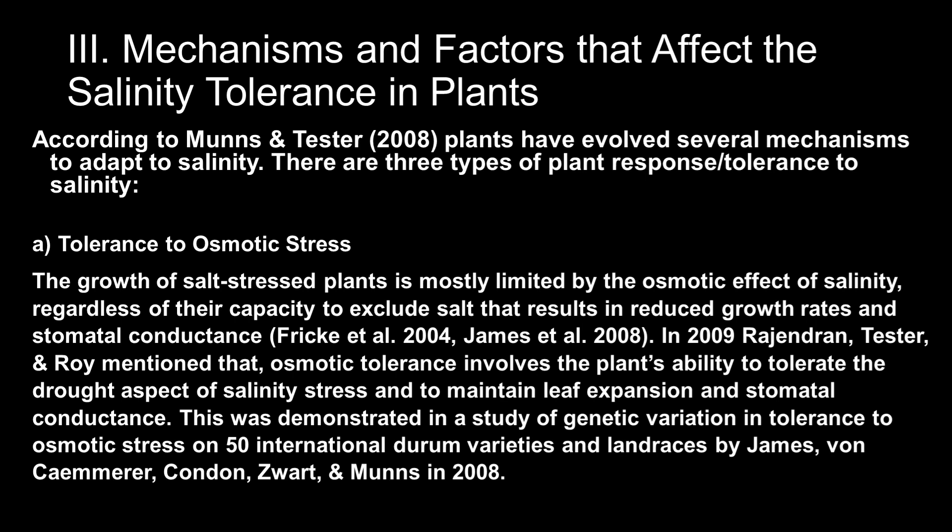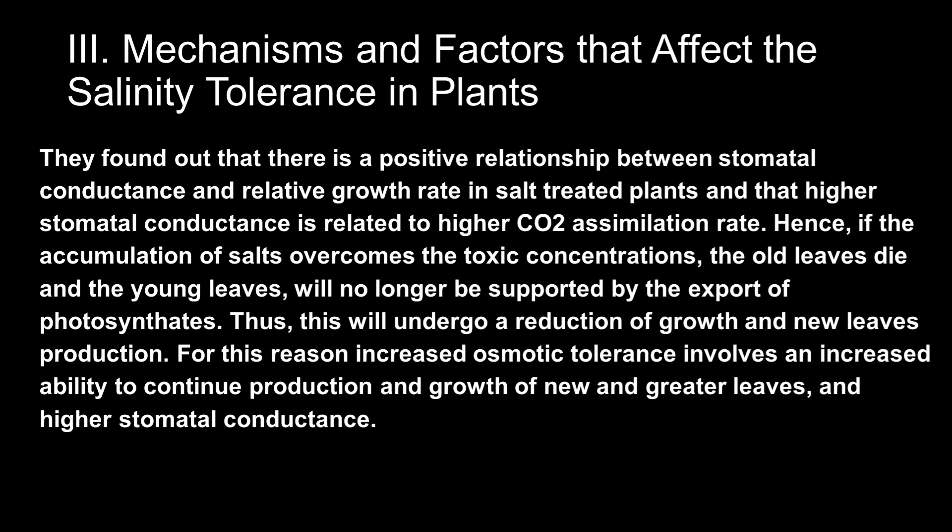The growth of salt-stressed plants is mostly limited by the osmotic effect of salinity, regardless of their capacity to exclude salt, resulting in reduced growth rates and stomatal conductance. In 2009, Rajendran, Tester, and Roy mentioned that osmotic tolerance involves the plant's ability to tolerate the drought aspect of salinity stress and to maintain leaf expansion and stomatal conductance. This was demonstrated in a study of genetic variation in tolerance to osmotic stress on 50 international wheat varieties and land races by James, von Kammerer, Pathan, Zwart, and Munns in 2008.